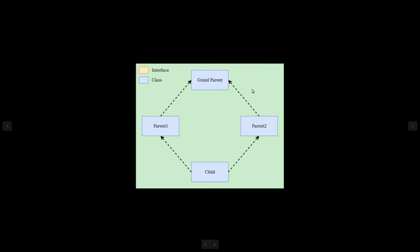Now, the child actually inherits both of these classes, parent1 and parent2 respectively. So when we try to call the method draw from the child class, the compiler cannot determine which method to be executed, because parent1 has its own implementation and parent2 gets the draw method from grandparent. So the compiler is helpless over there.